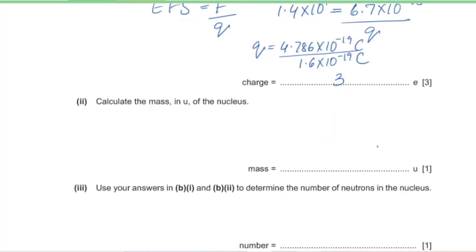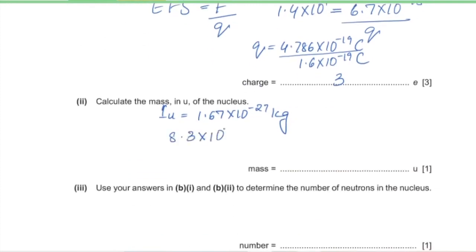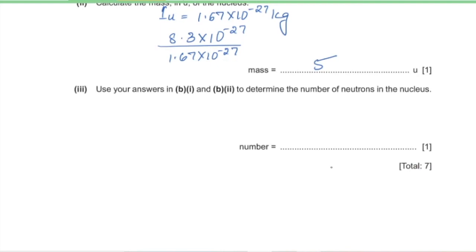Part 2: calculate the mass of the nucleus in u. Each atomic mass unit u = 1.67 × 10⁻²⁷ kg. Dividing the nuclear mass 8.3 × 10⁻²⁷ by 1.67 × 10⁻²⁷ gives a mass of 5 u. Part 3: determine the number of neutrons. The nucleus has nucleon number 5 and proton number 3, so number of neutrons = 5 − 3 = 2 neutrons.